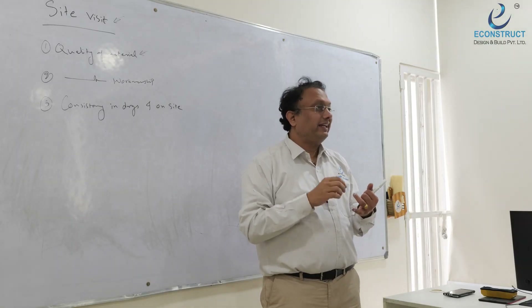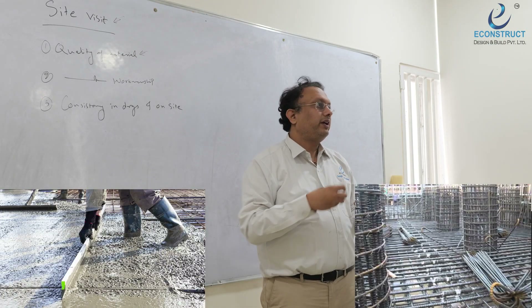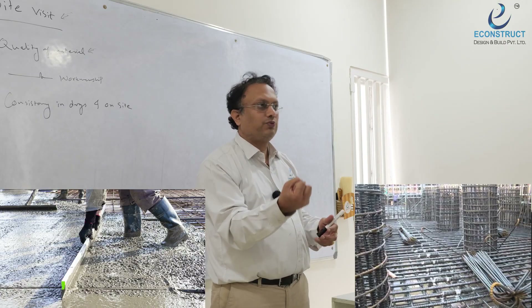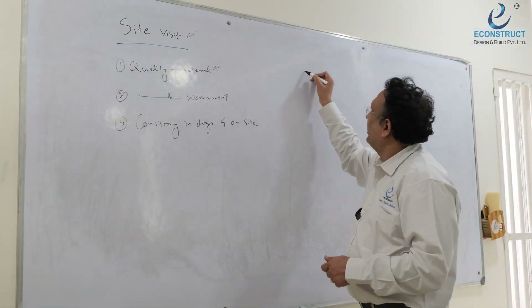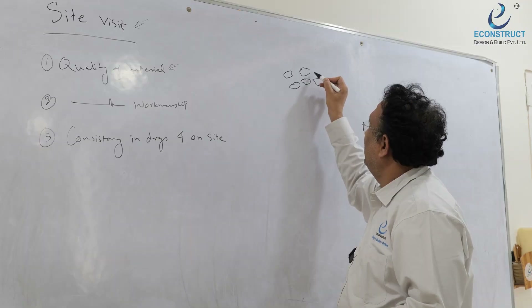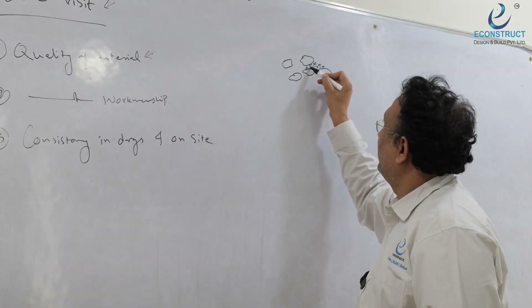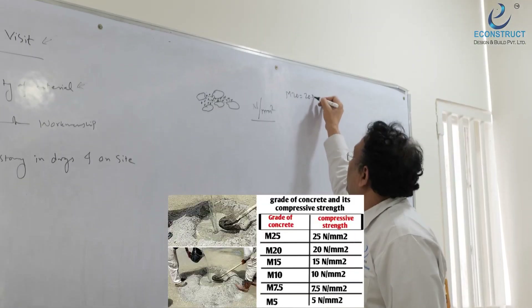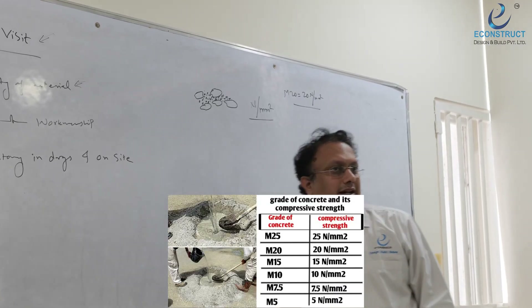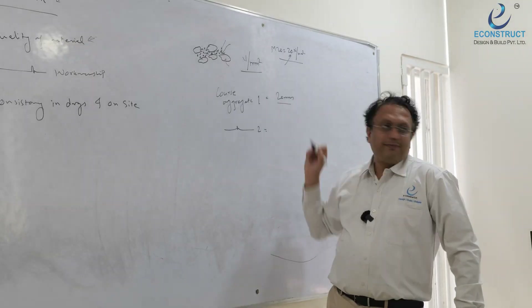Quality of material means the quality of ingredients for concrete and quality of steel. If new cement has come, you will see that it is warm. Concrete is made up of coarse aggregate, fine aggregate, and cement. M20 means 20 Newton per mm² characteristic strength after 28 days of curing. The aggregate size should not be more than 20mm — surface area is very important.